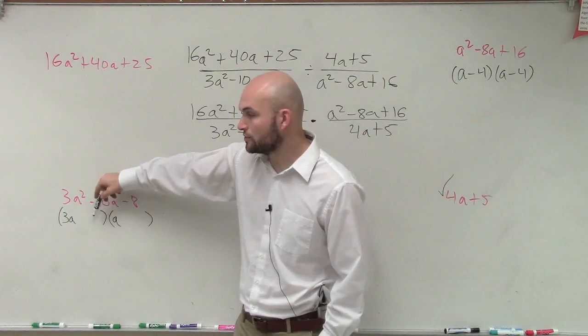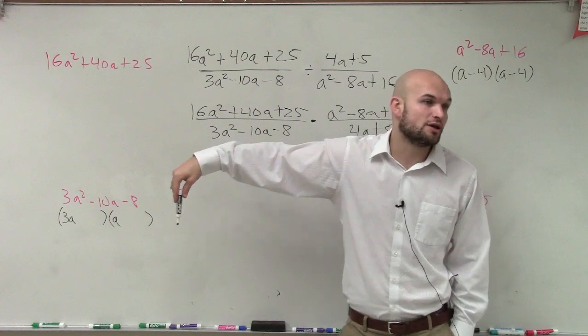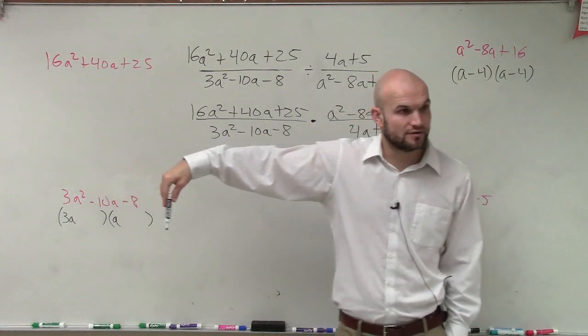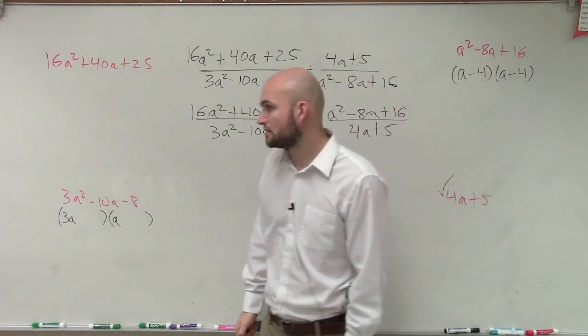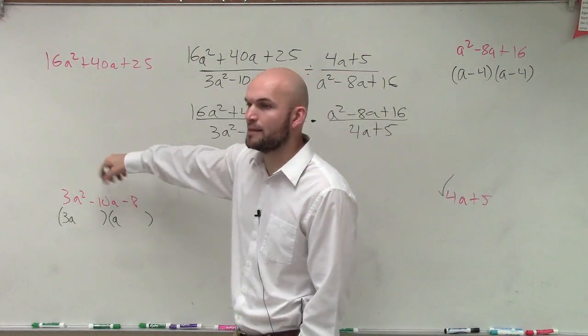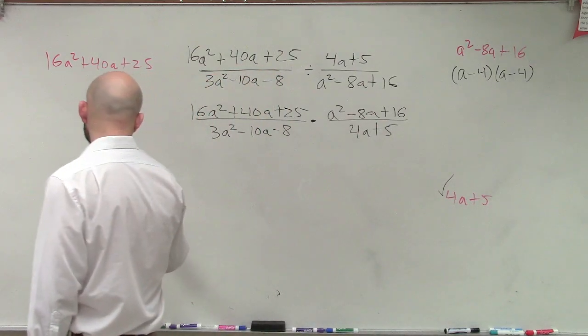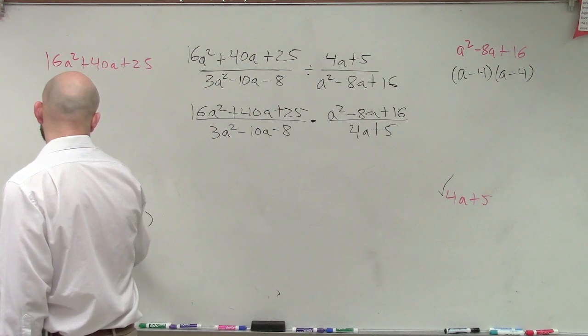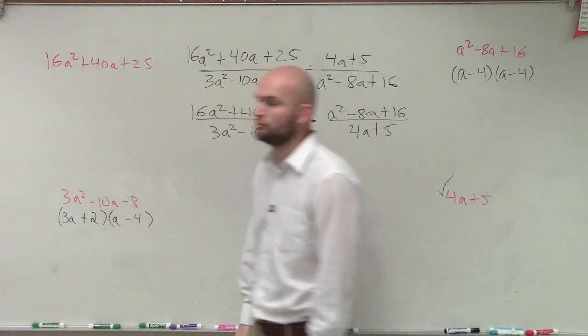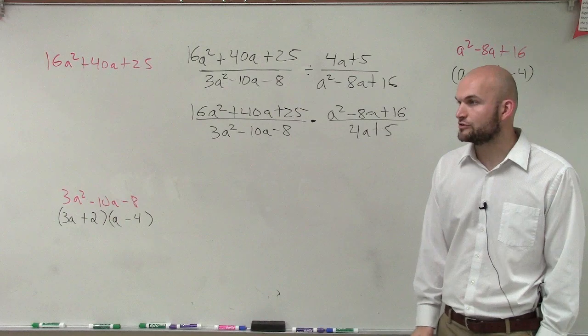And then the last two have to multiply to give you negative 8. So it could be negative 8 and positive 1, or it could be negative 4 and positive 2, right? So if I look at this, which times when I multiply am I going to get middle terms that's going to be a negative 10a? Well, by using process of elimination, you guys hopefully will be able to check my answer and see that that is the correct factor form.